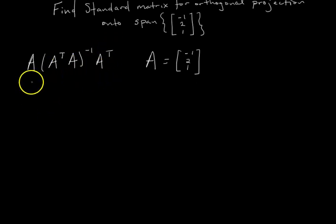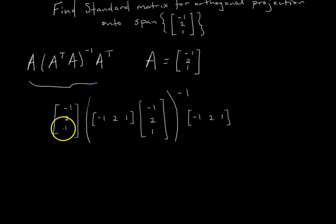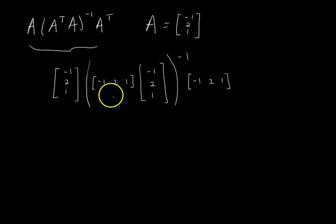We get our standard matrix is given by this. So plugging in, we get A times A transpose A, the whole thing inverse, times A transpose. So it looks a little funky, but we can certainly simplify this. We get A, we'll simplify the inverse matrix first. This guy is, well, let's think, does this grow into a three by three matrix or shrink into a one by one matrix?